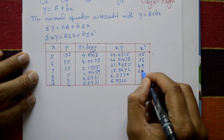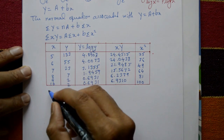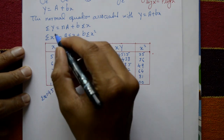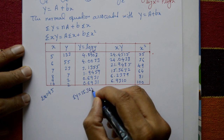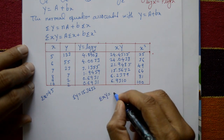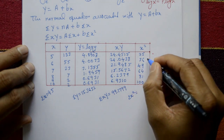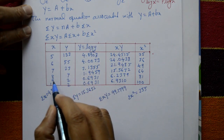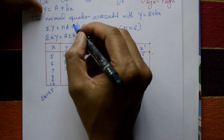The x² values are: 25, 36, 49, 64, 81, 100. The summations are: Σx = 45, ΣY = 99.1799 — wait, ΣY = 15.3652 total from the Y column, Σx² = 355, and ΣxY = 99.1799. The number of data points n = 6.